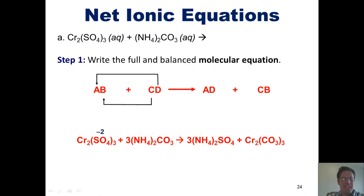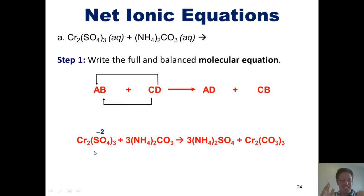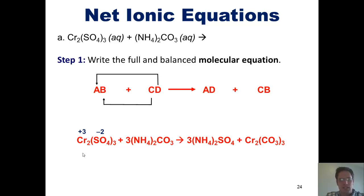We've been given this formula in the problem. Keeping in mind that each sulfate has a charge of −2 and there are 3 total of them, there is a total negative charge of −6 that two chromiums have to neutralize. So what charge does each chromium have to have? Positive 3.